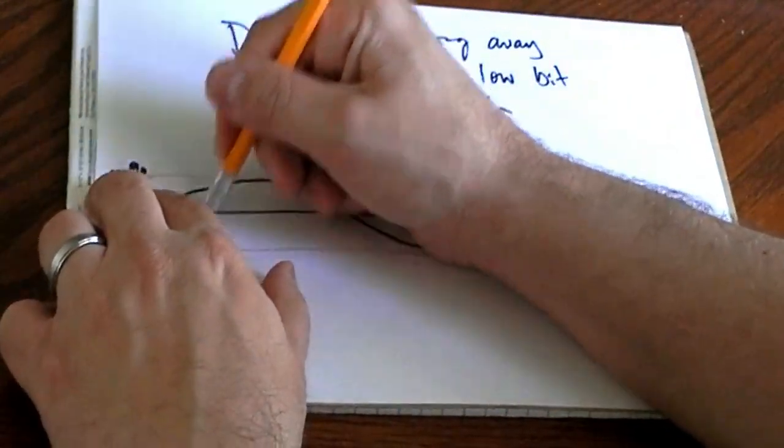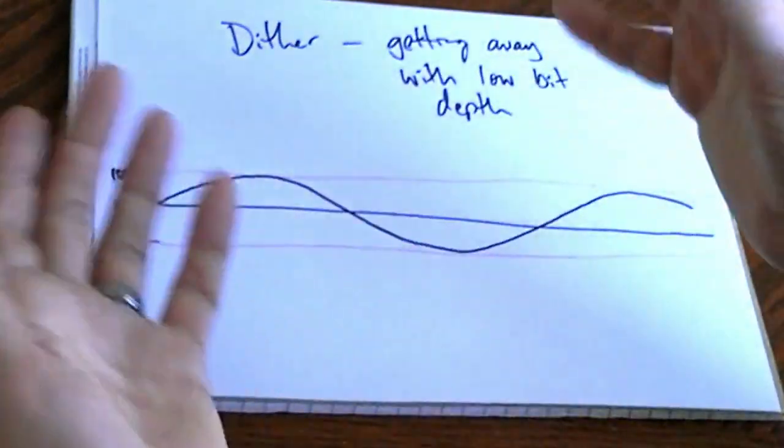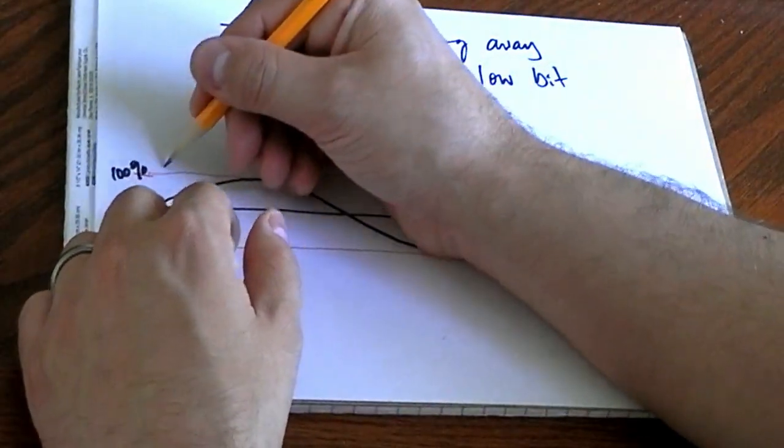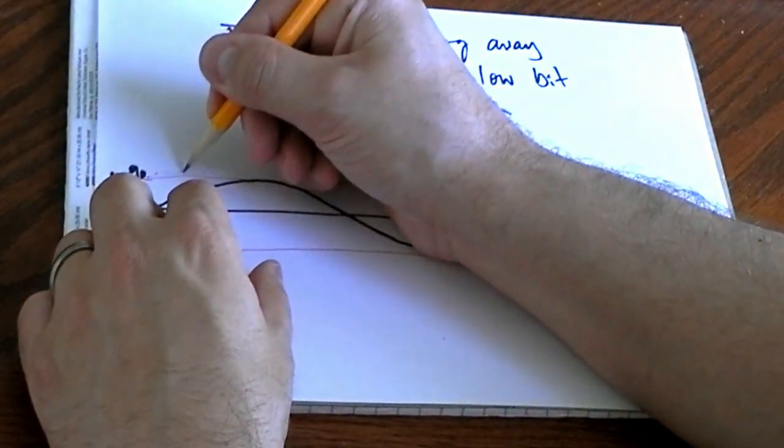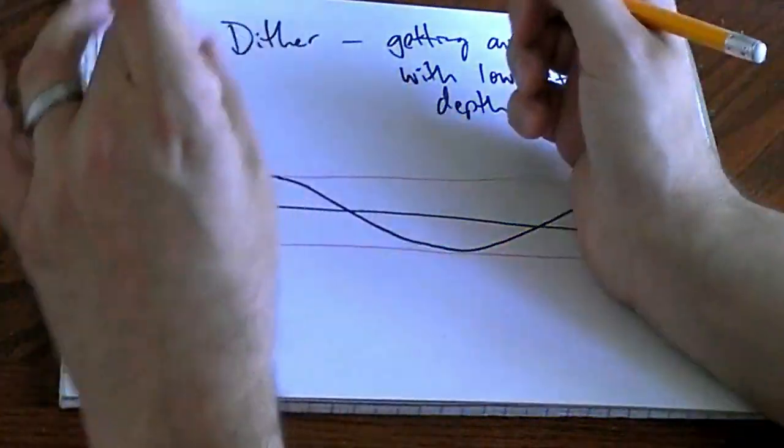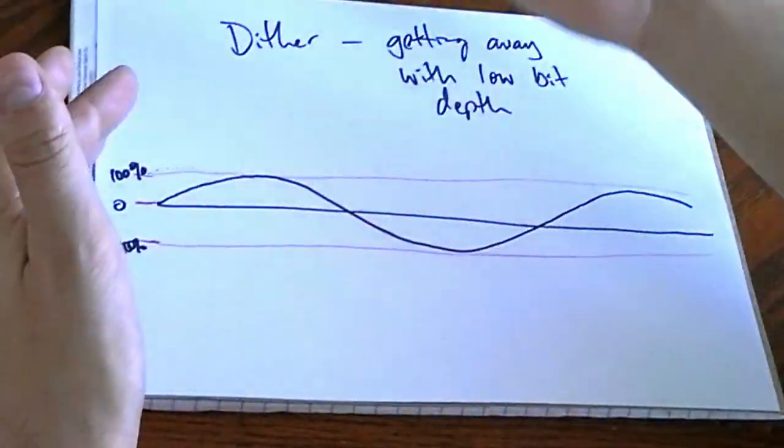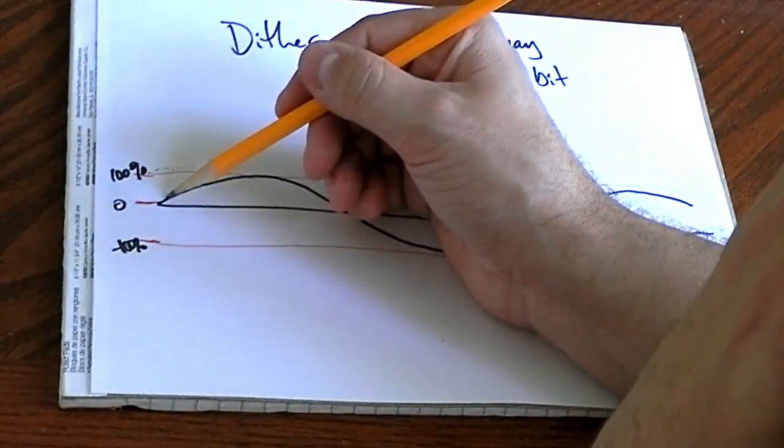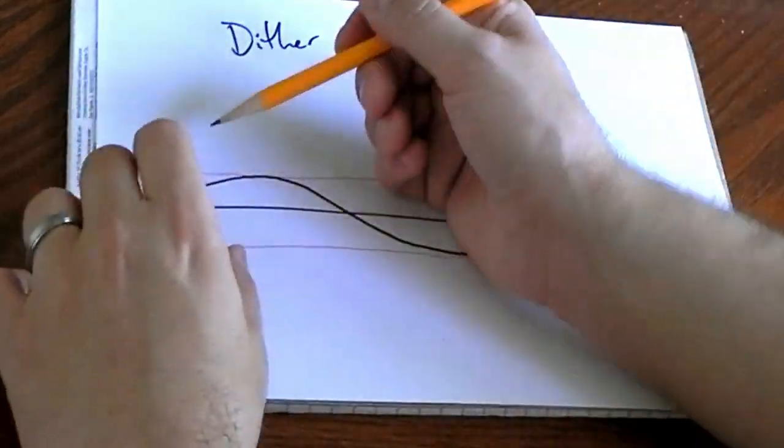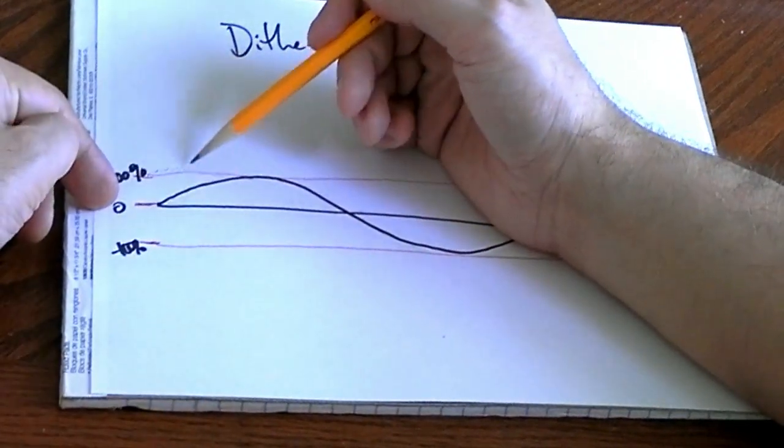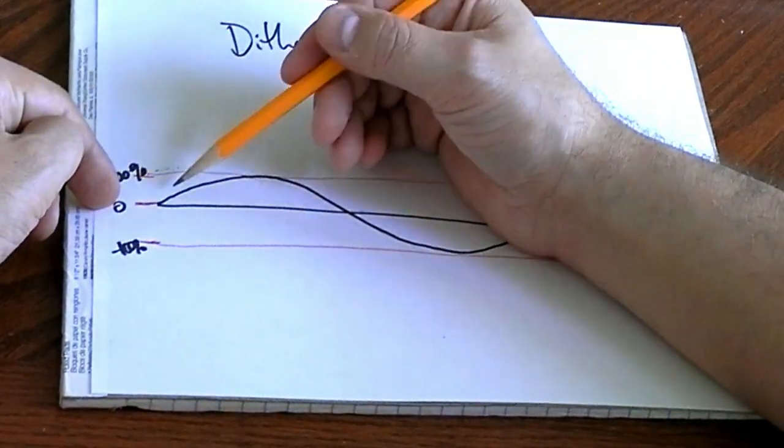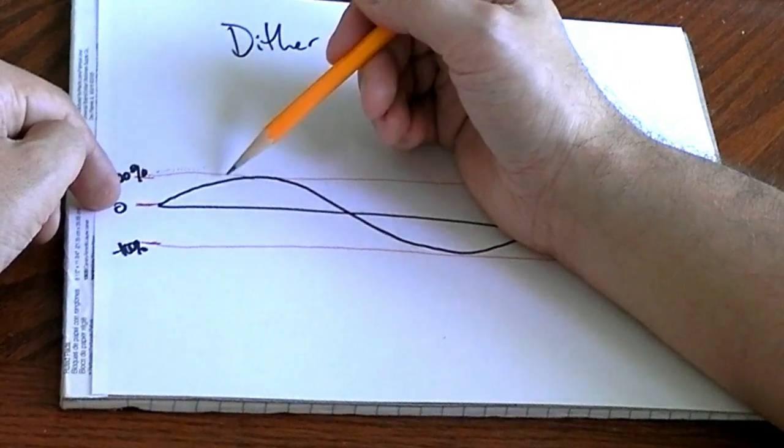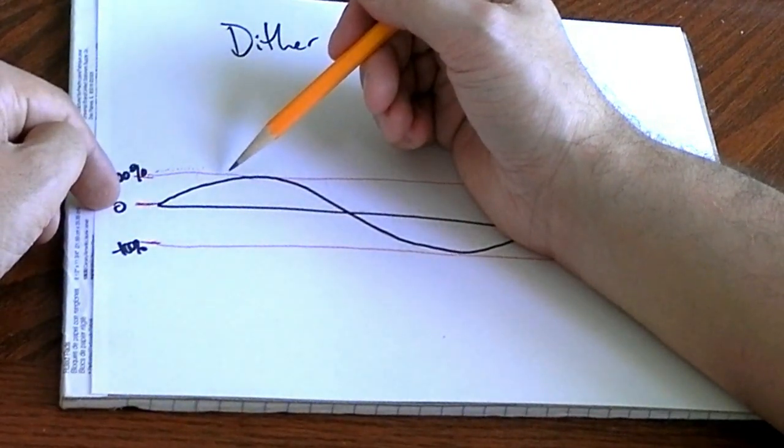But dither to the rescue. If our sampling rate is fairly high, let's say about this frequent, what you end up doing is dither randomizes it a little bit. So during the times in which the original signal is between these two points, dither will alternate between them proportionately to how close it is to one or the other.